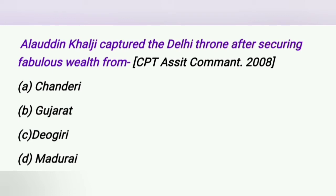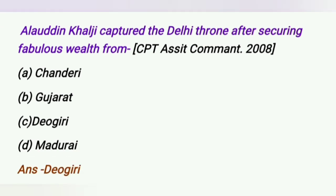Alauddin Khalji captured the Delhi throne after securing fabulous wealth from: A. Chanderi, B. Gujarat, C. Devagiri, D. Madurai. The answer is Devagiri.